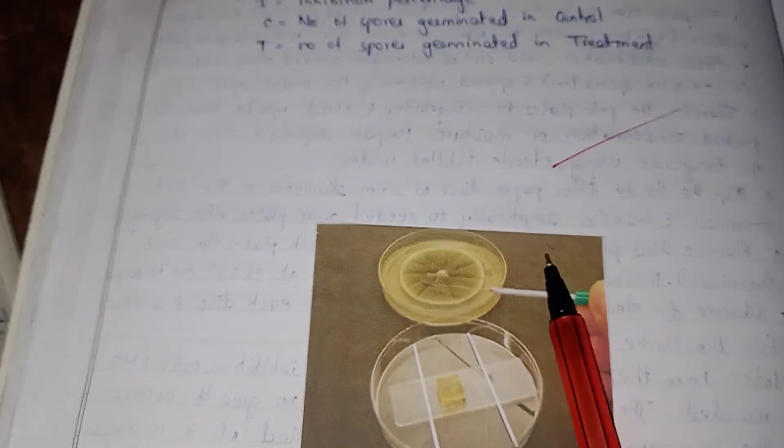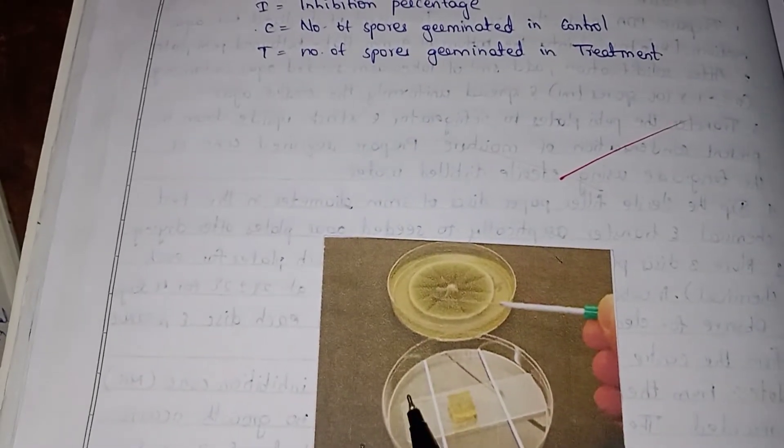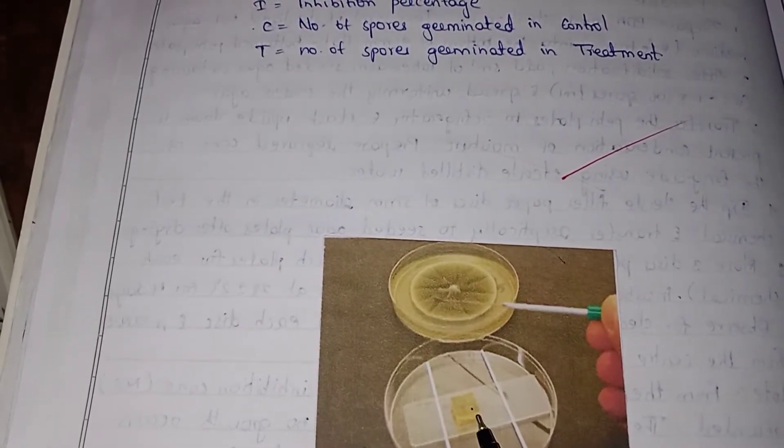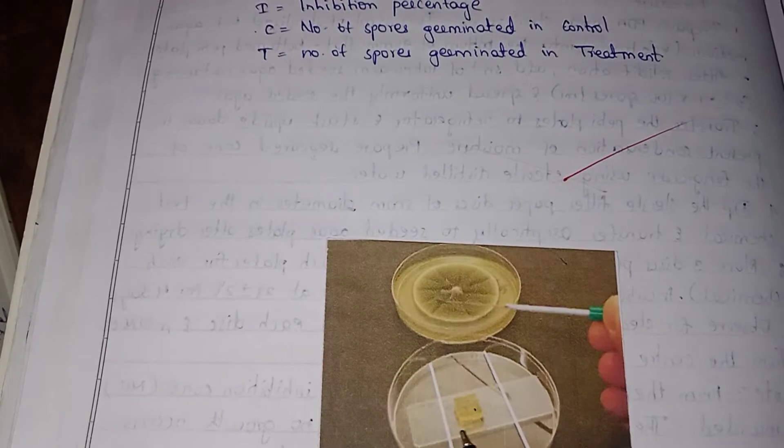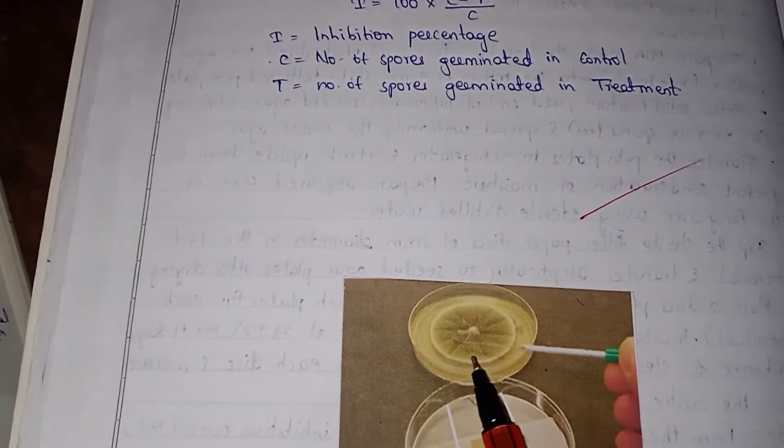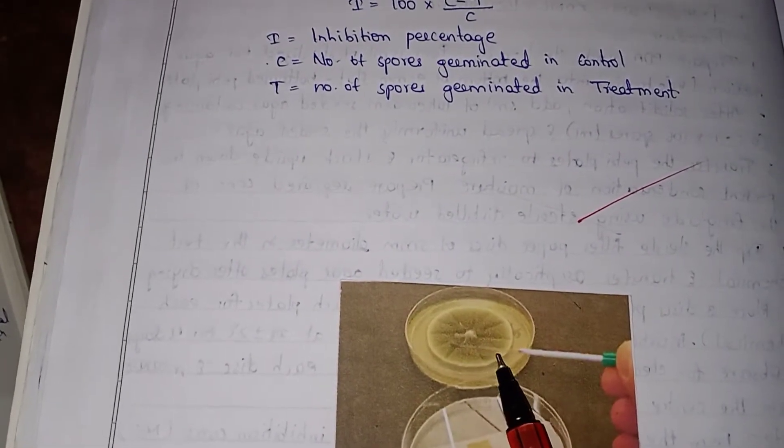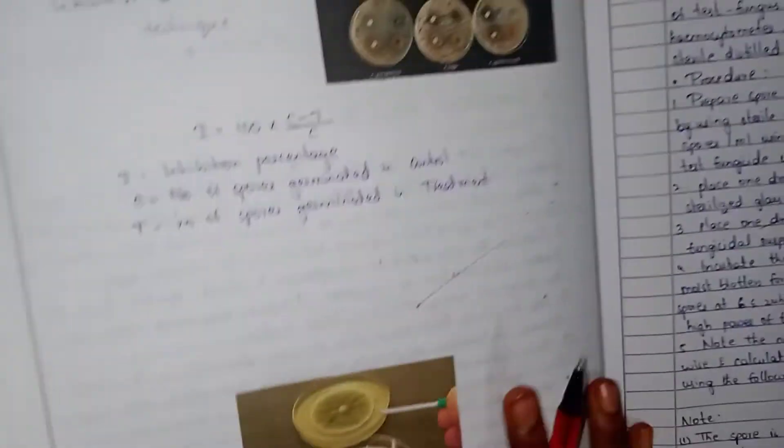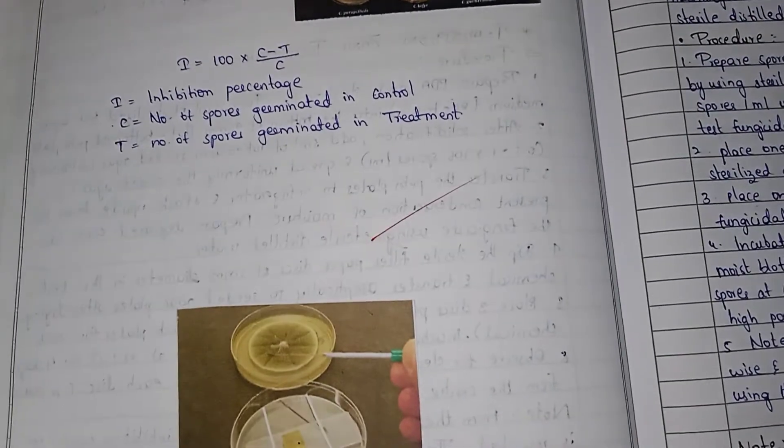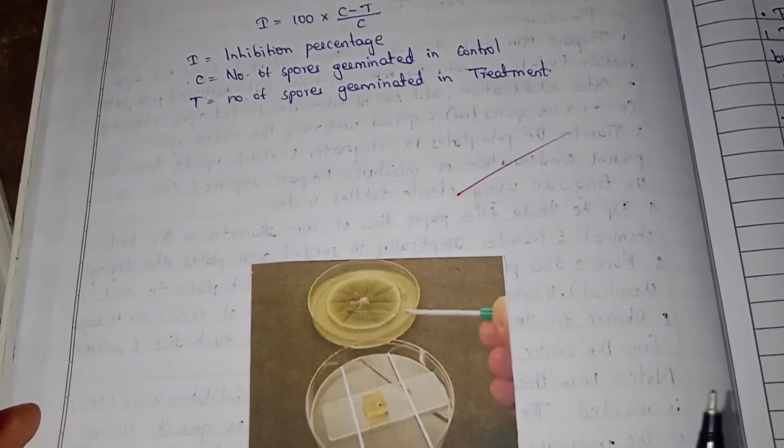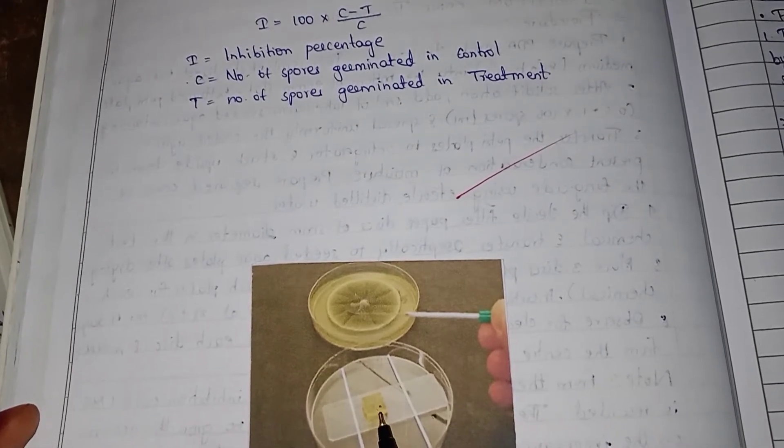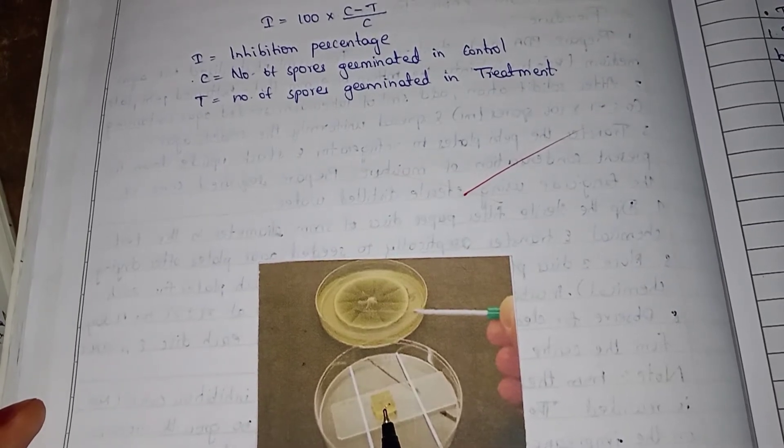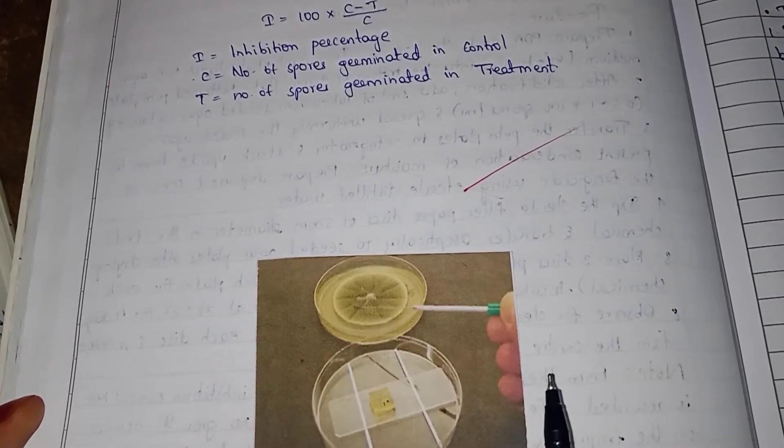One petri plate is prepared with glass slide. The fungicide solution drop is placed with spore suspension drop on the glass slide. The petri plate is lined with moist blotting paper at the bottom. The same procedure is repeated. Another petri plate with fungicide solution and spore suspension drop is prepared. The control petri plate has only spore suspension to check fungus growth.